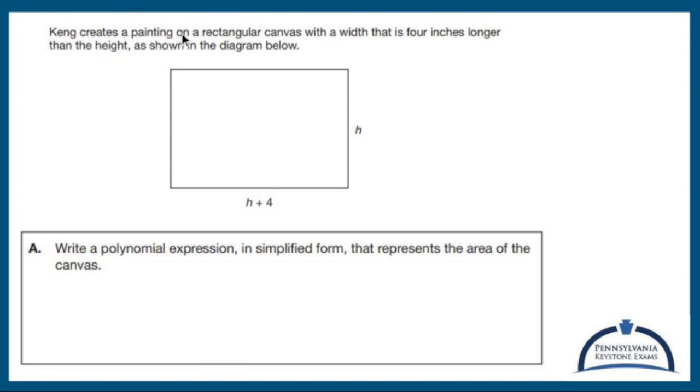Kang creates a painting on a rectangular canvas with a width that is four inches longer than the height, as shown in the diagram below. Write a polynomial expression in simplified form that represents the area of the canvas.